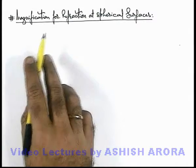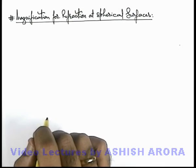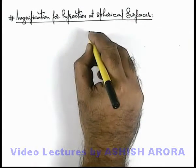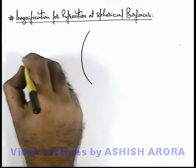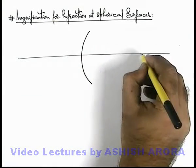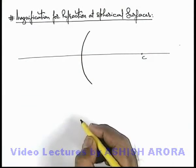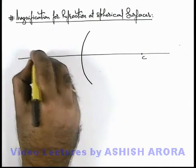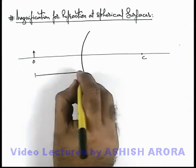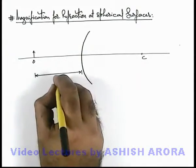Let us study the magnification for refraction at spherical surfaces. Here we are given a spherical surface with its optic axis and center of curvature, and an object is placed at a distance u from the pole of this medium boundary.